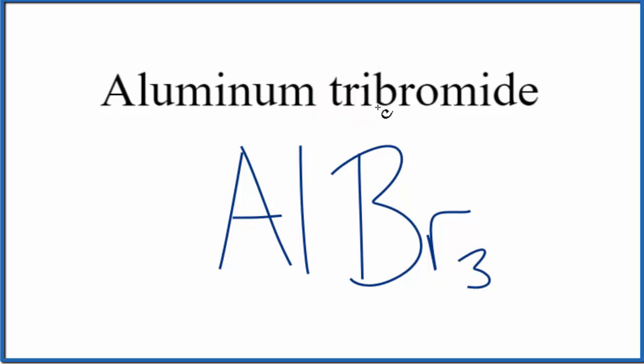That makes the formula for aluminum tribromide AlBr₃. If you're given the formula and asked to write the name for AlBr₃, you could go with aluminum tribromide or you could just say aluminum bromide as well.